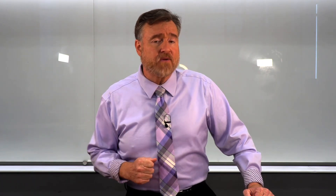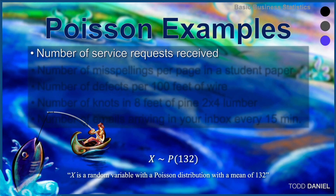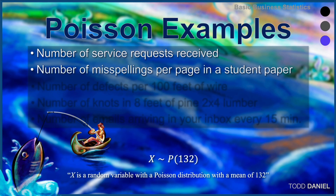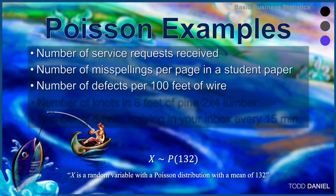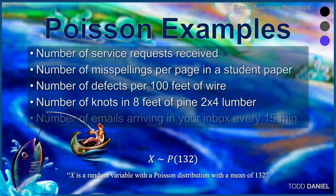What is unique about the Poisson distribution is that the mean and the variance are equal. Examples of when we might use a Poisson distribution include: the number of service requests received per hour at a phone bank, the number of misspellings per page on a student paper, the number of defects per 100 feet of wire, the number of knots in 8 feet of pine 2x4 lumber, or the number of emails arriving in your inbox every 15 minutes.